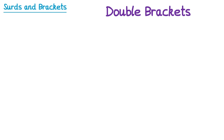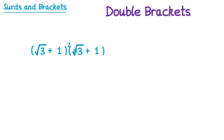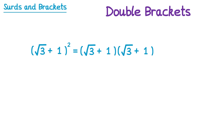Sometimes you'll have a double bracket question that doesn't immediately look like a double bracket — for example, the square root of 3 plus 1, all squared. A really common wrong answer is people square both terms inside the bracket: they square root 3 to get 3, and square 1 to get 1, then just do 3 plus 1 to get 4. But that's incorrect. When we square a bracket we're multiplying that bracket by itself, so it's actually a double bracket.